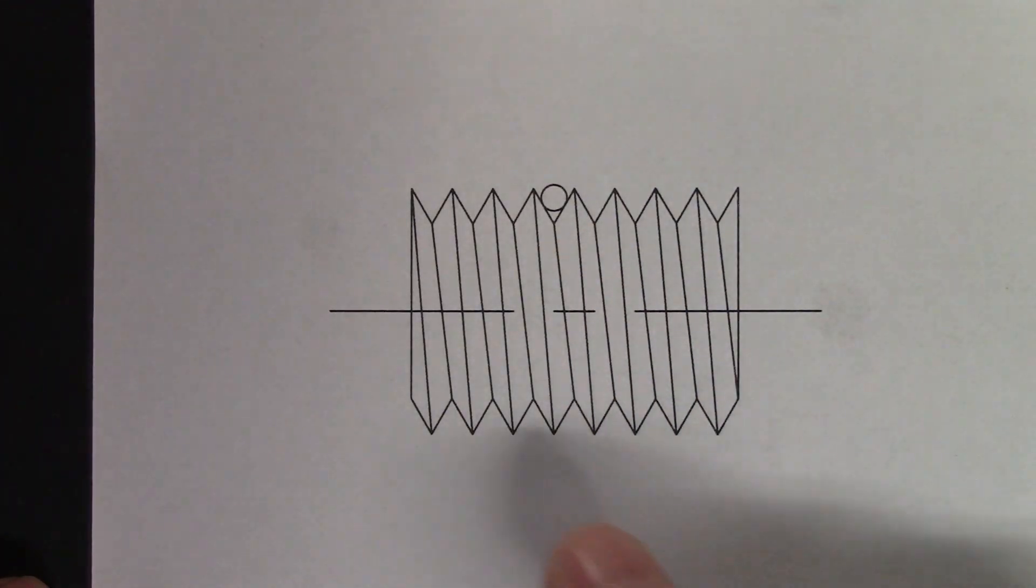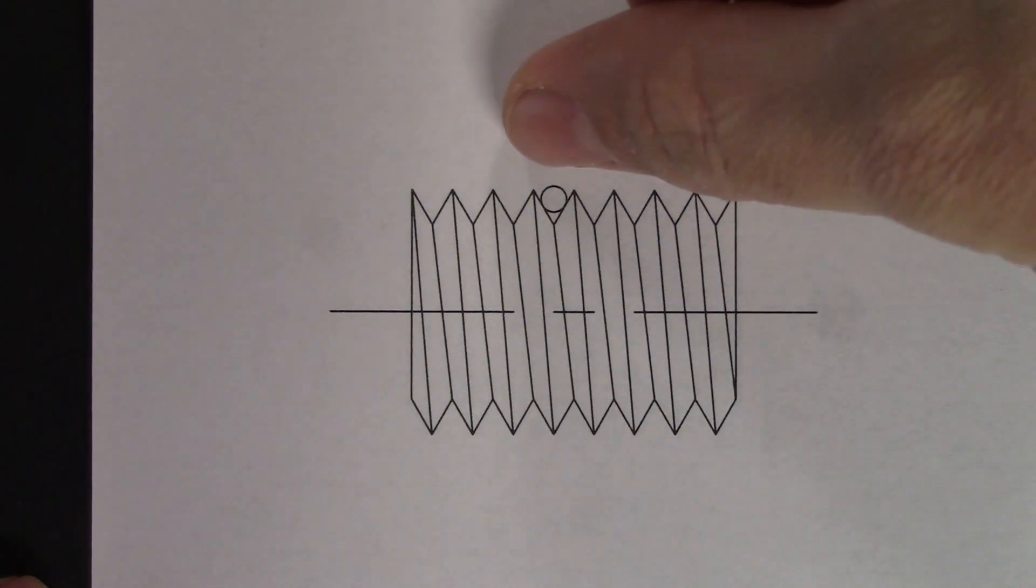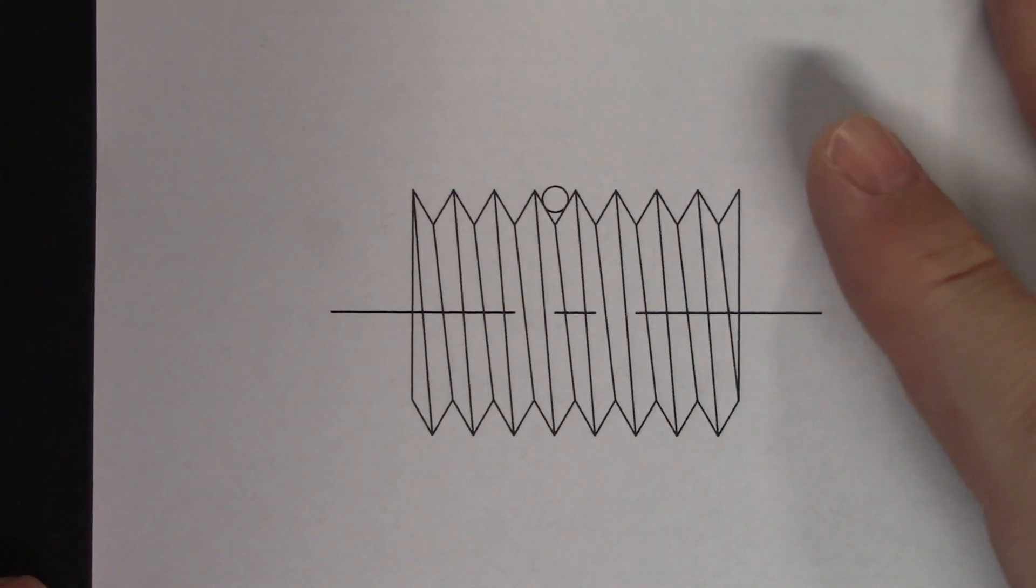With the one-wire method, you're measuring from the diameter of the part to the top of a single wire on the other side of the thread. To get the result, you'll have to do some arithmetic.